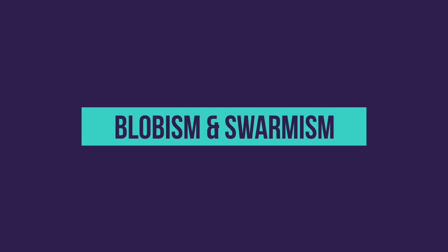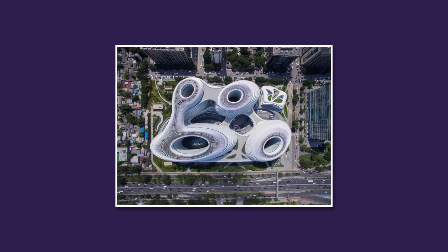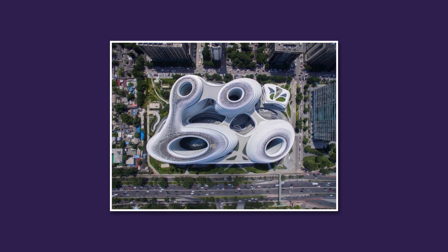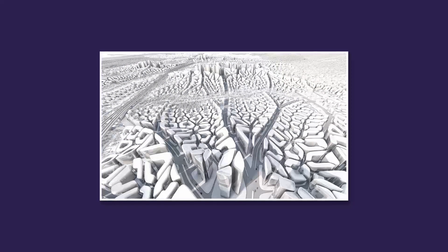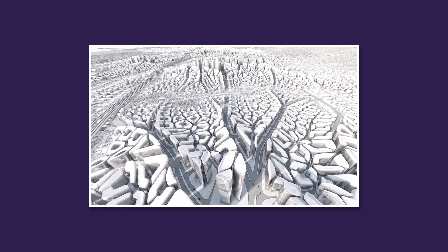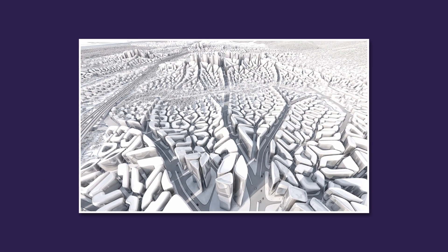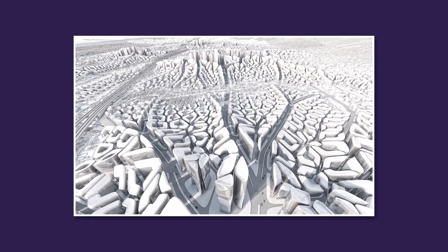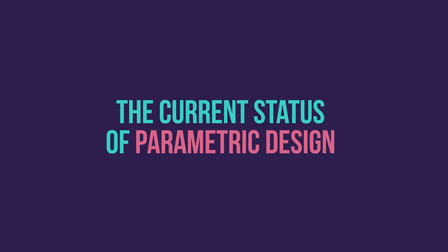Blobism and Swarmism are basically similar to the first iteration of parametric design. Blobism is the fusion of blobs into volumes, delivering a new level of complexity against the existing urban landscape. Swarmism applies more to urban design, where a swarm of elements is used instead of one surface. The sheer quantity of elements should react as if they are one form following a continuous shape.